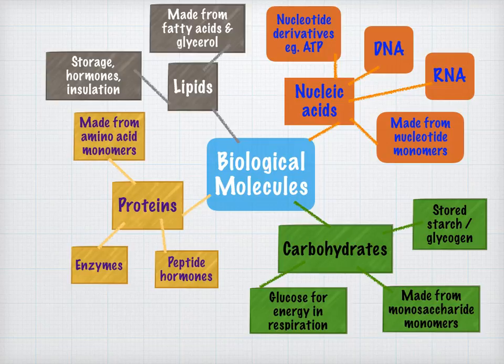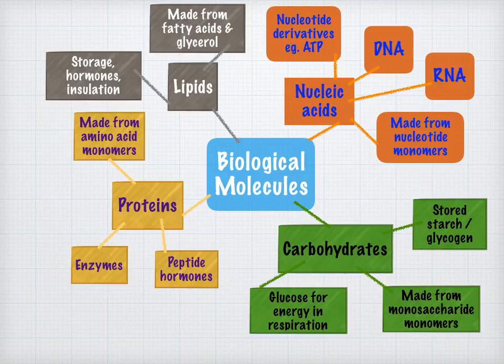The main ones that you'll need to know about are proteins, carbohydrates and nucleic acids. All of these three are what's called polymers, so they're made up from lots of repeating units called monomers joined together. The fourth one that you need to know about is lipids. On this slide are a few uses and examples of these compounds so you can get an overview of why they're important in living organisms.